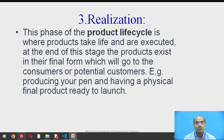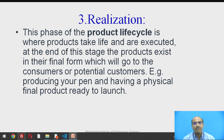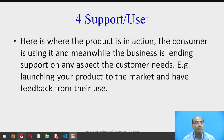The third stage is realization — the tangibility we offer to this artifact from the manufacturing side. This phase of the product life cycle is where the product takes life and is executed. At the end of this stage, the product exists in its final form ready for the consumer. For example, producing your pen and having a physical final product ready to launch — this is the realization stage.